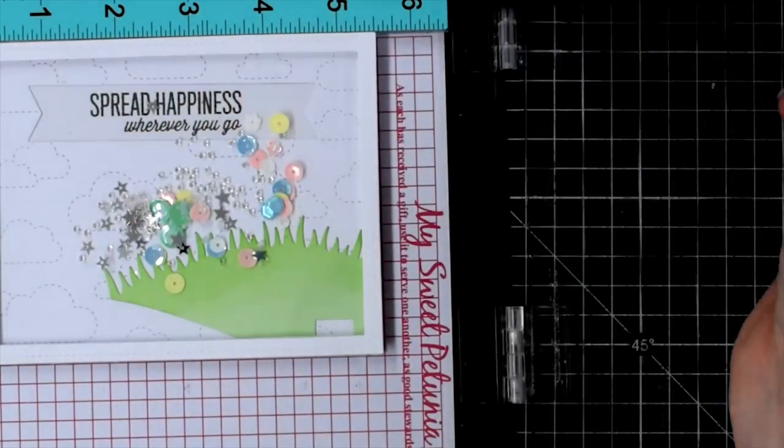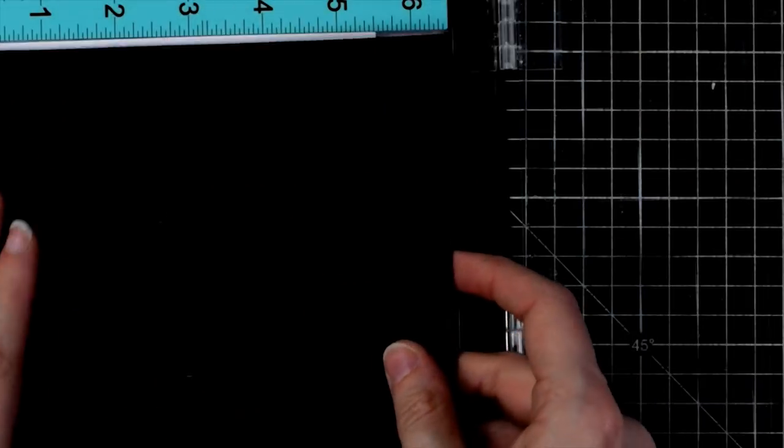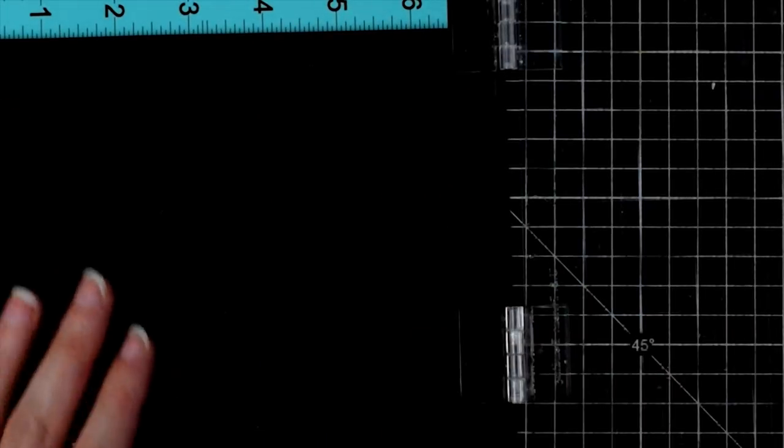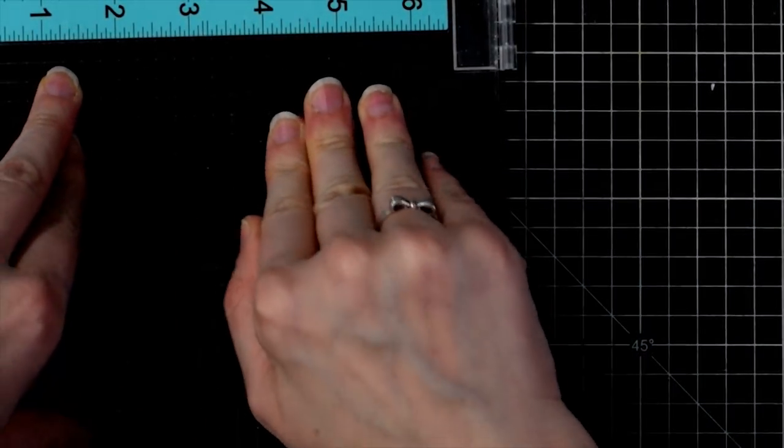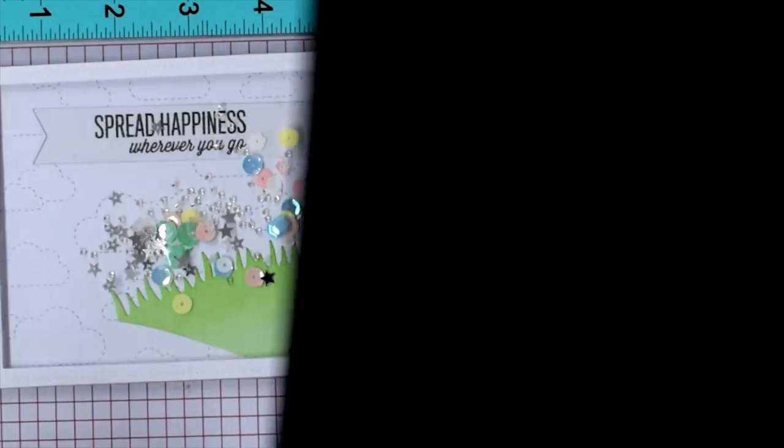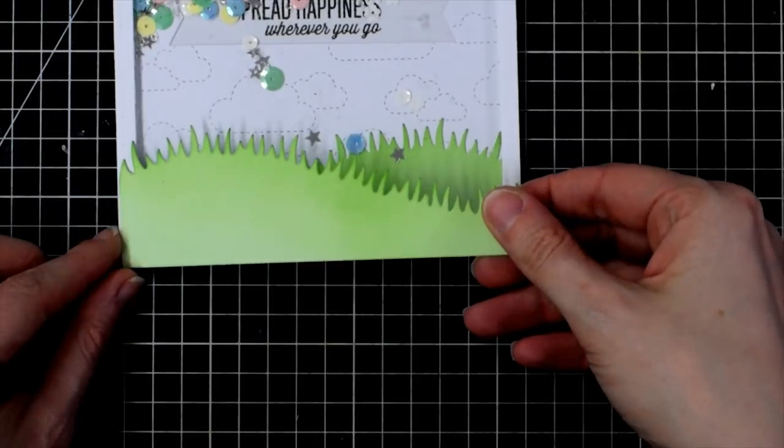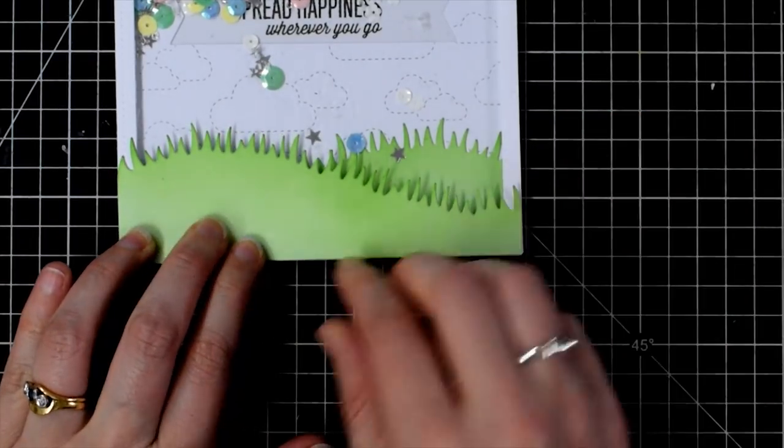Now I want to make sure that all of the frame is stuck down really well. So I'm taking my foam mat off my MISTI, placing it on top and closing the lid, giving it a good push down and that just helps make sure that all of the adhesive is stuck real good down there. None of my sequins are going to get trapped behind it.